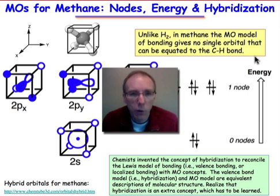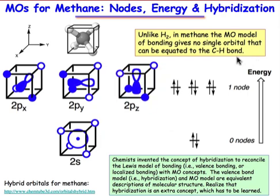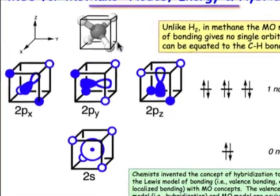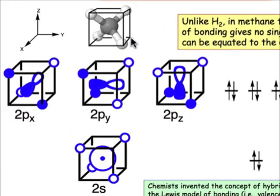We're going to see that in the molecule methane, where we'll work out some of the molecular orbitals that are produced from the LCAO method. Here's our point of reference. It's a tetrahedron methane molecule.